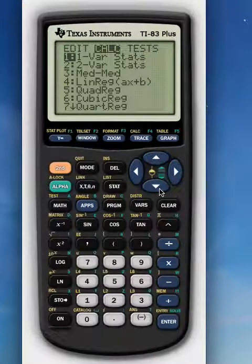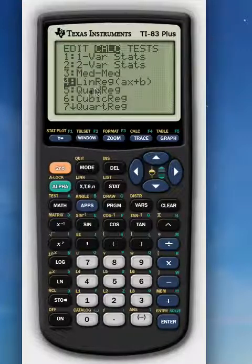We're calculating two variable, well actually we're not calculating two variable. Come down here where it says lin reg AX plus B. That's linear regression line in the form AX plus B where A is the slope and B is the Y intercept.